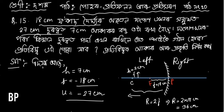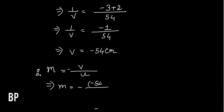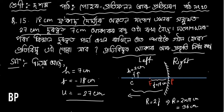So the image has formed. Next we need to find the size and nature of the image. For that we use magnification: m is equal to minus v by u. So m is equal to minus v, which is minus 54.